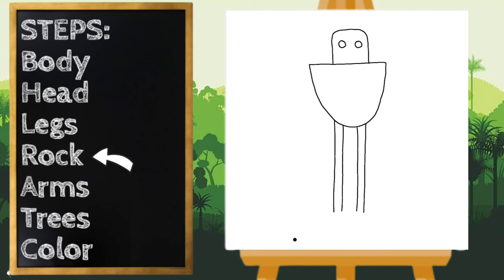All right, next I'm going to draw the rock that Roz is standing on. And that's just like an upside down U-shape. And make sure her legs connect.